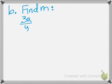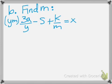Next problem, find m: 3a over y minus s plus k over m equals x. We need to multiply to get rid of the denominators. Multiply everything by ym.